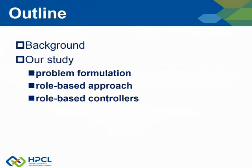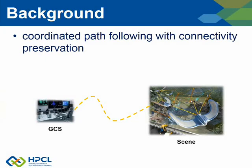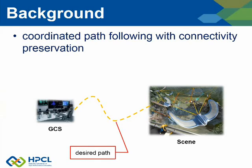The presentation has two parts: background and study. We all recognize that multi-agent systems have potential values in various areas and play an important role in many cooperative applications, such as logistics, transportation and military. In this paper, we focus on a problem called coordinated path following with connectivity preservation, in which a crowd of robots are assigned to take off from a ground control station and track a desired motion path coordinately while keeping connectivity until reaching the destination.